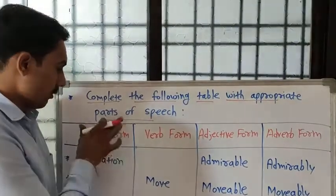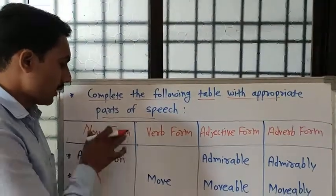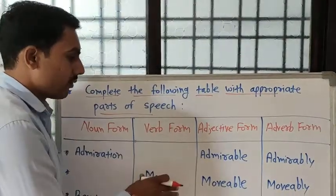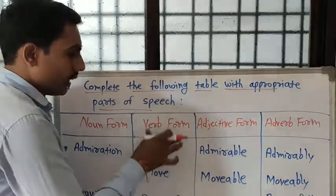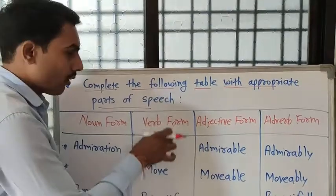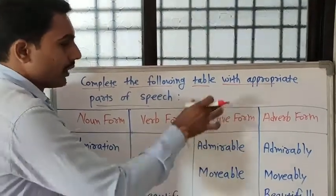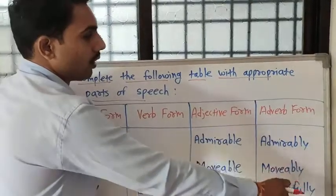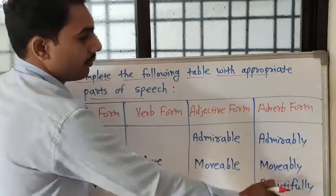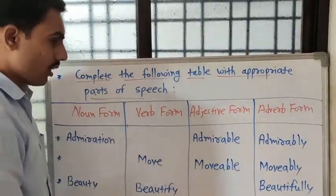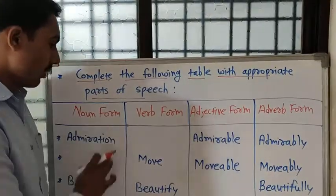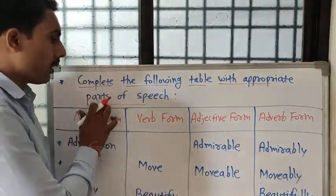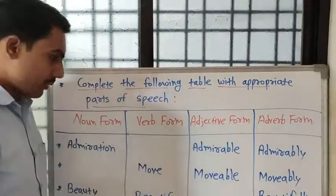Here are some columns. One column is the noun column. The second column is the verb form, the third column is the adjective form, and the fourth column is the adverb form. Dear students, look here — we want to complete this table with appropriate parts of speech.